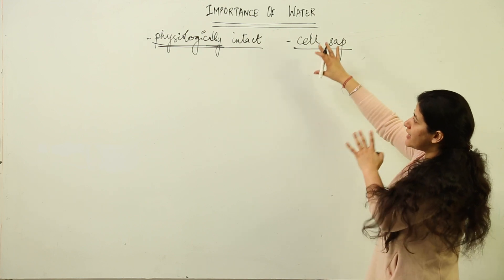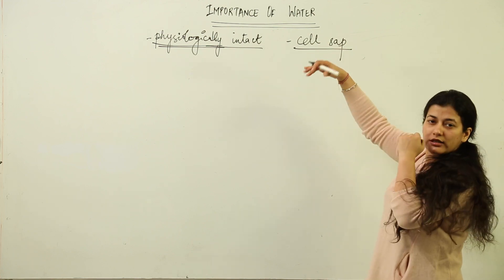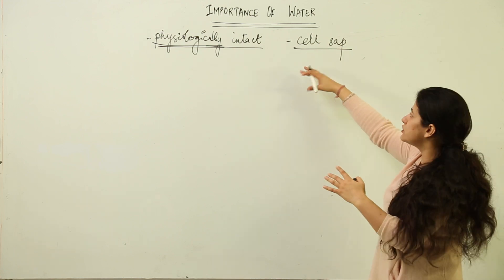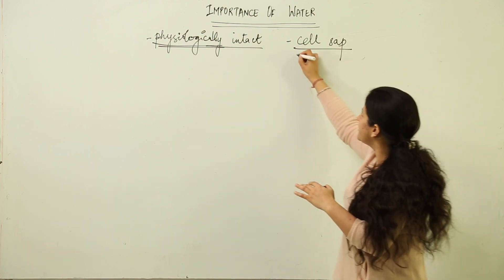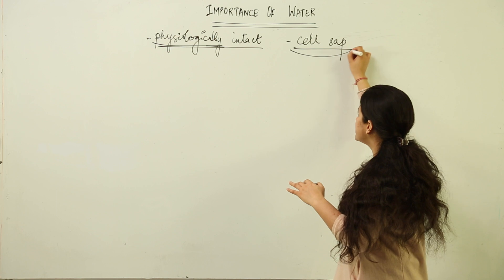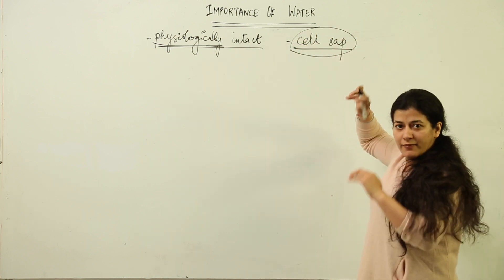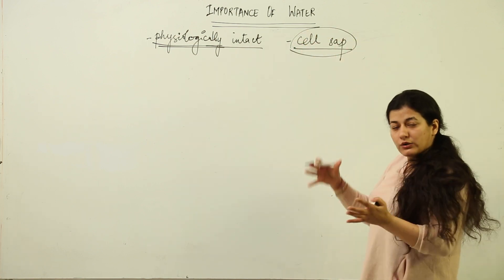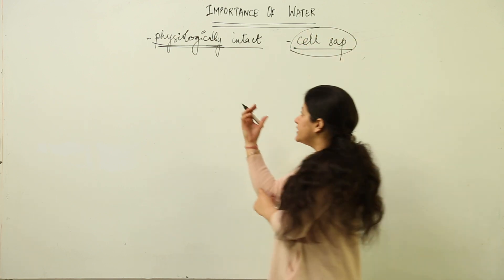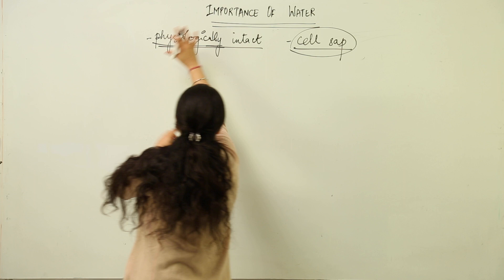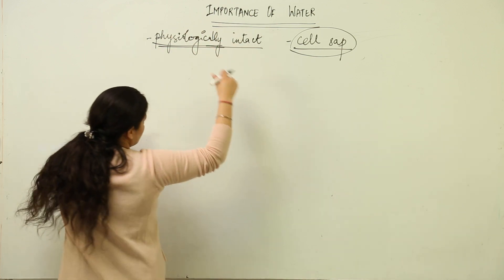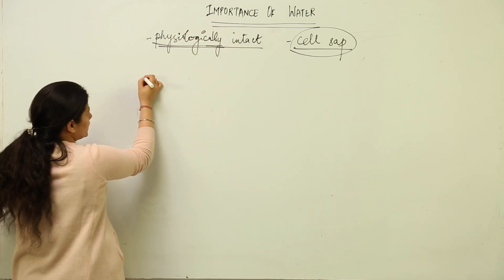It keeps the plant cell physiologically intact because it is the main constituent of the cell sap. Talking about the external conditions, this is about the physiological aspect of the water.